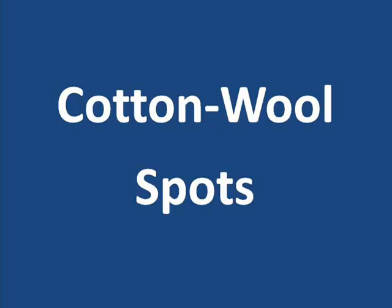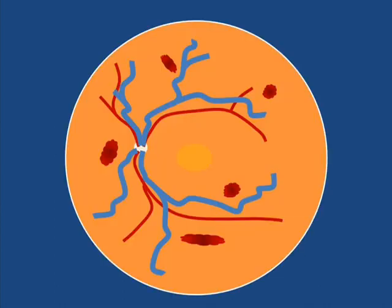Cotton wool spots are white, soft-edged spots which sometimes appear on the retina during the course of central retinal vein occlusion. These areas of swelling reflect the accumulation of cellular debris in the cells of the uppermost layers of the retina. They often occur on the border of ischemic areas of the retina. Though cotton wool spots may resolve by themselves over time, blind areas corresponding to the location of the cotton wool spots may persist.